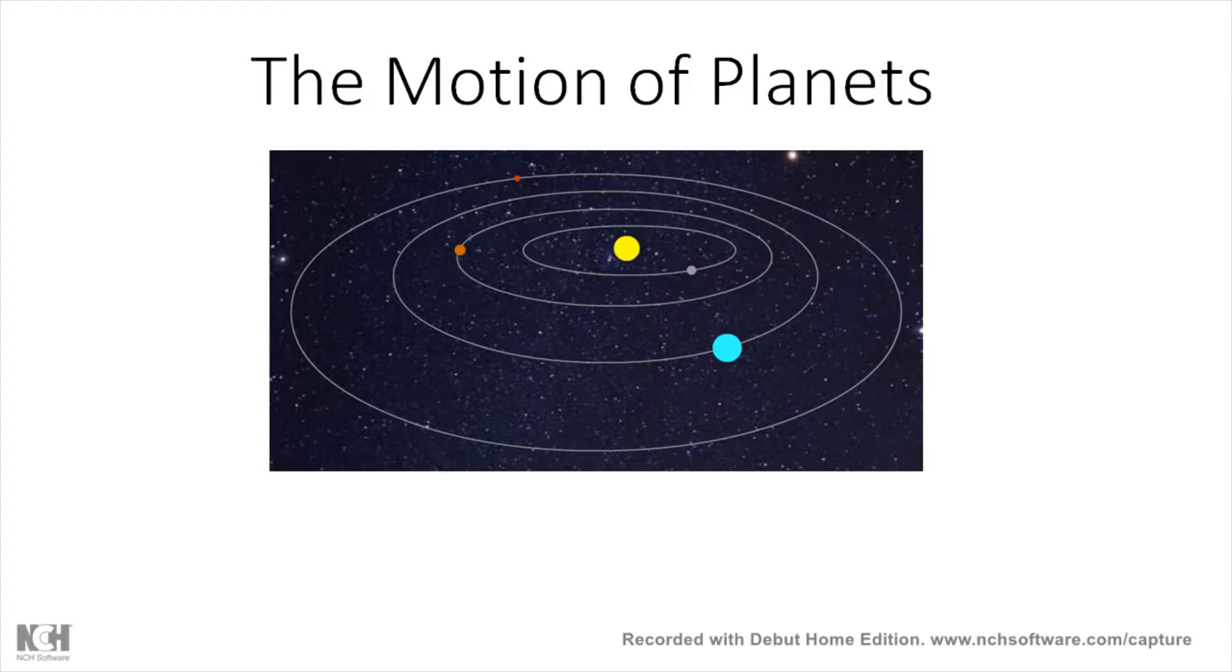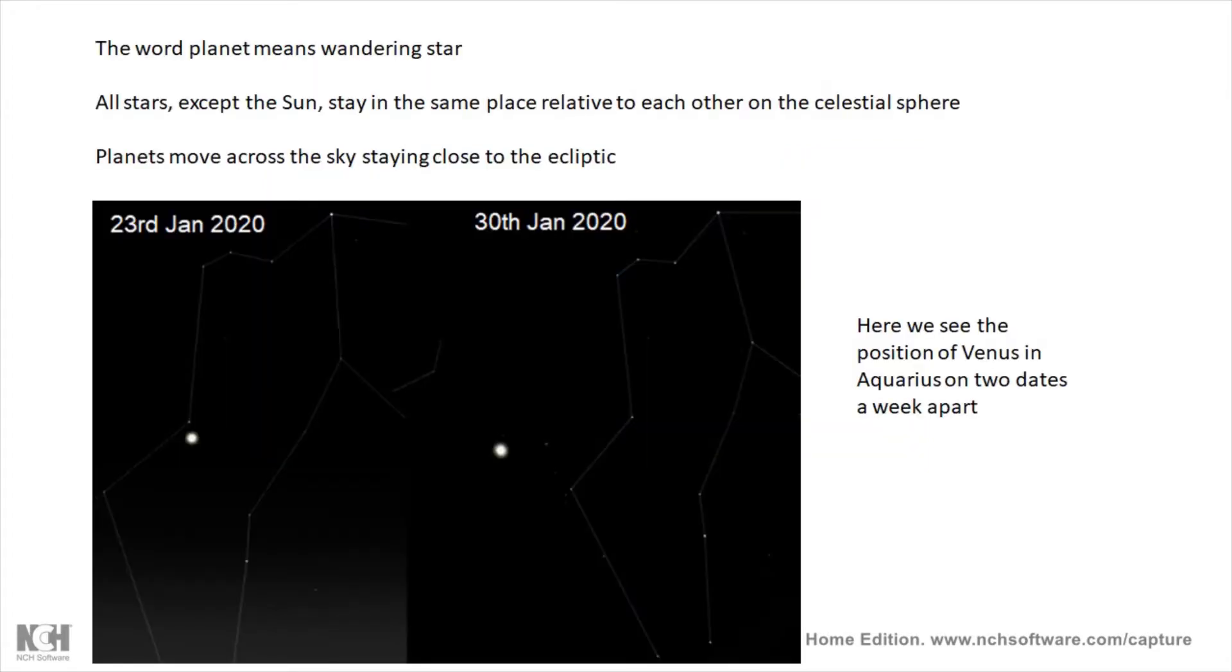Topic five: when we talk about the apparent motion of the planets in the sky, there are quite a few terms that you need to know. The word planet actually means wandering star. Lots and lots of stars in the sky in constellations, and all of these stars stay in the same place, at least in our lifetime they will stay in the same place on the celestial sphere.